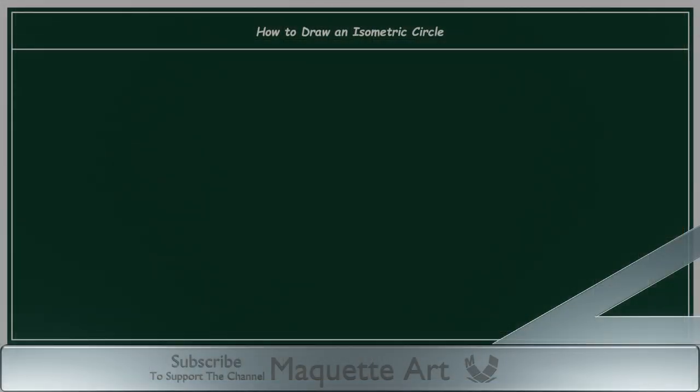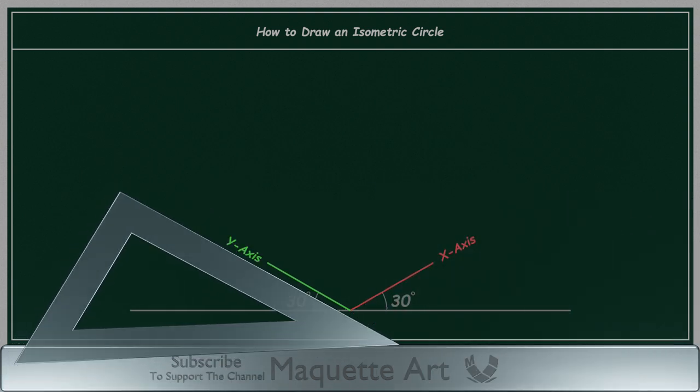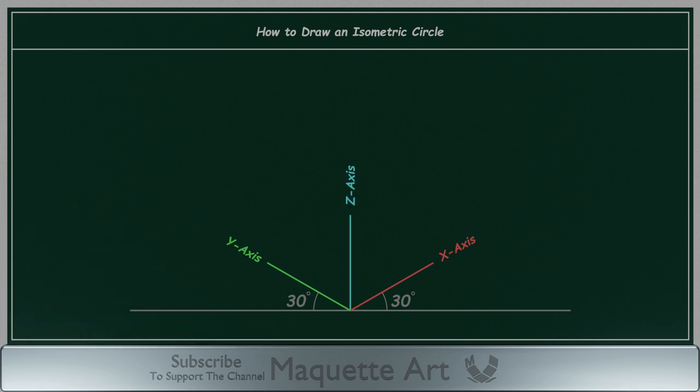In a previous video, we learned that in the isometric view, the X and Y axes are drawn at 30 degree angle to the horizontal, and you will use the T-square and the 30 degree triangle to draw them. And the Z-axis is a vertical line. Also you will be using the T-square and triangle to draw vertical lines.